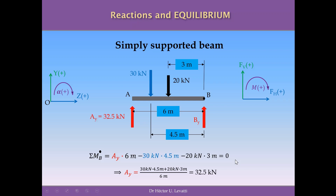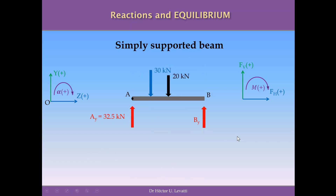I replace this value in the free body diagram and remove the equation. The vertical reaction AY is equal to 32.5 kN.